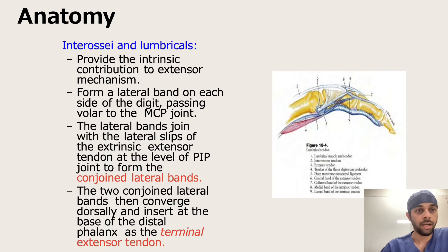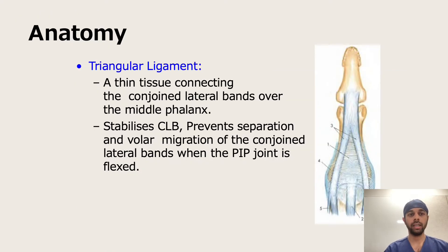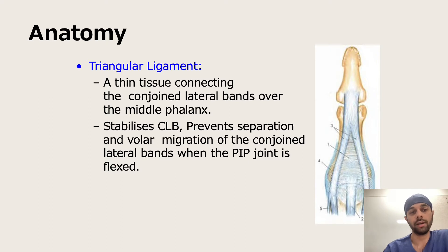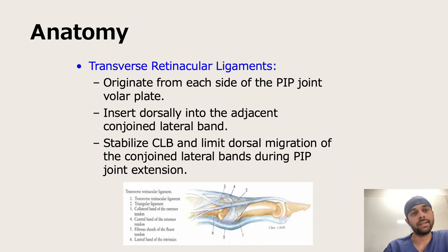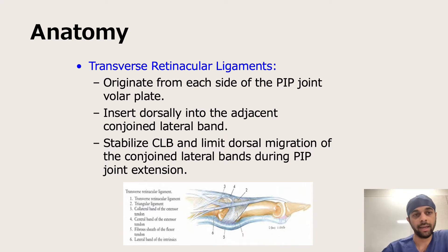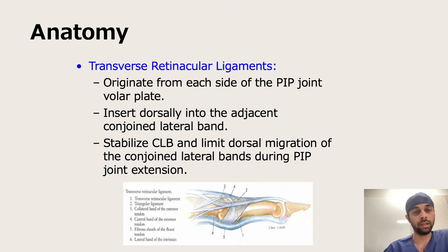Apart from the bands and slips, we have the triangular ligament, which is a thin tissue connecting the two conjoined lateral bands over the middle phalanx. This is very important in stabilizing the conjoined lateral bands — it prevents the separation and volar migration of the conjoined lateral bands when the proximal interphalangeal joint is in flexion. The other is the transverse retinacular ligament. They originate from each side of the proximal PIP joint from the volar plate and go dorsally into the adjacent conjoined band. They stabilize the conjoined lateral bands and limit their dorsal migration when the PIP joint is in extension. These two ligaments are very important for the deformities we are going to talk about next.